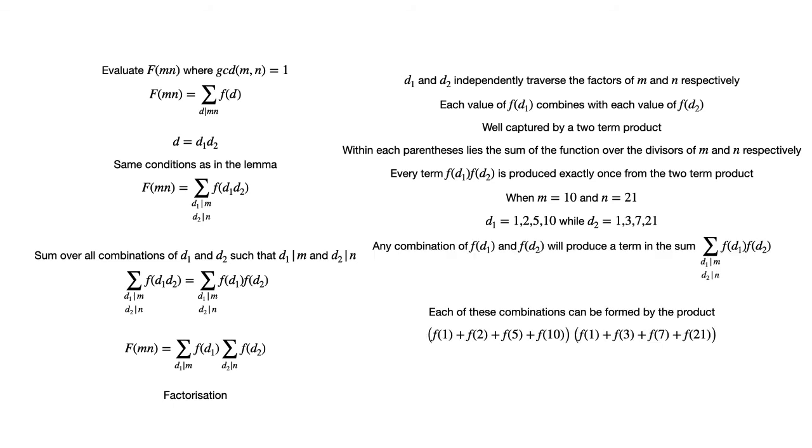Any combination of little f of d₁ and little f of d₂ will produce a term in the sum of little f of d₁ multiplied by little f of d₂ as d₁ divides m and d₂ divides n. But each of these combinations can be formed by the product f of 1 plus f of 2 plus f of 5 plus f of 10 multiplied by f of 1 plus f of 3 plus f of 7 plus f of 21.